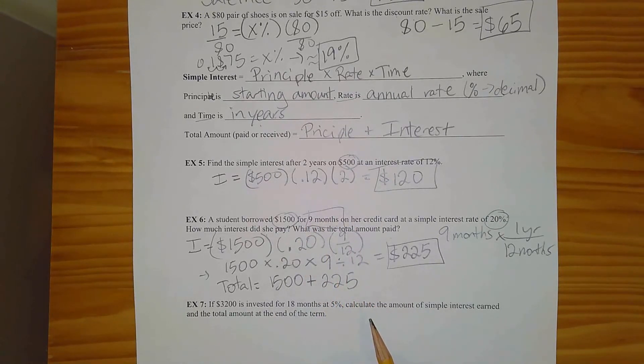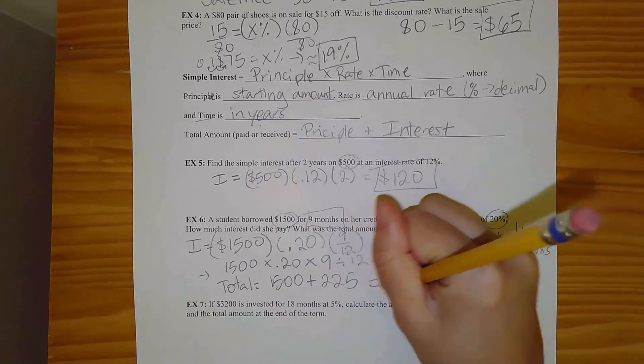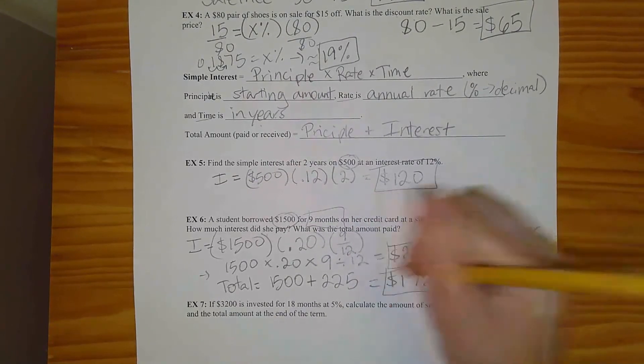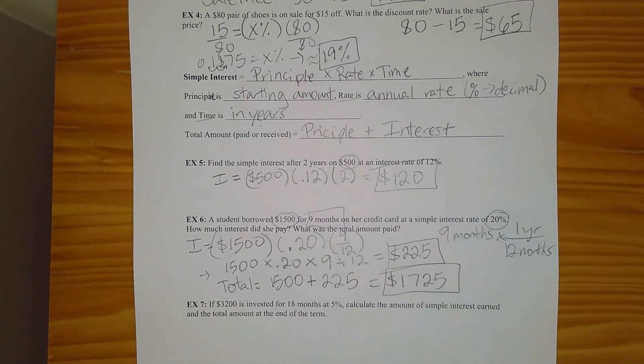So that's the amount of extra that she had to pay because she took nine months to pay it off. And I hope all of you at home know to pay off your credit cards much, much, much sooner than nine months, preferably by the end of the month. So you don't get any interest at all. You guys all know that? Yes. Great. Anyway, 1500 plus 225 would give her a total of $1,725 that she spent that month.